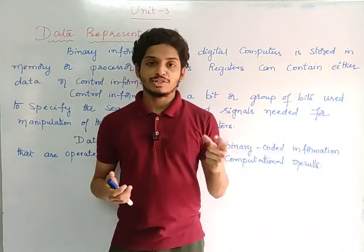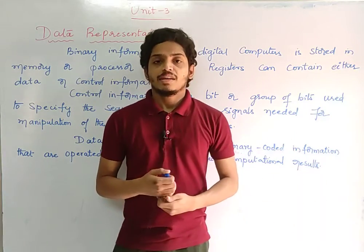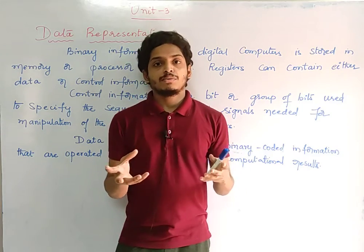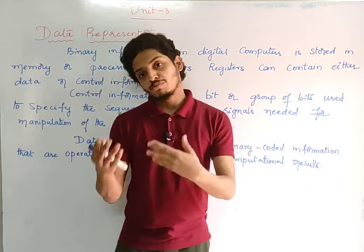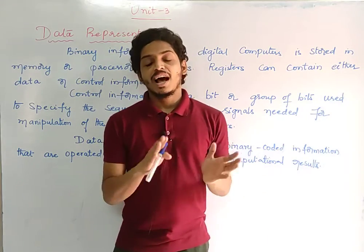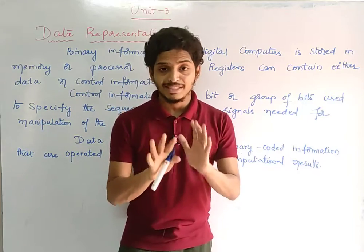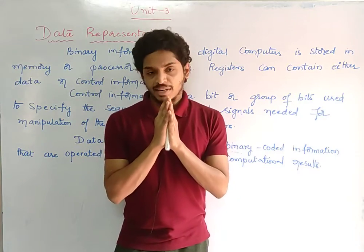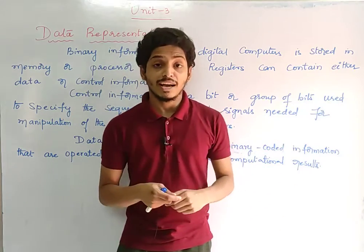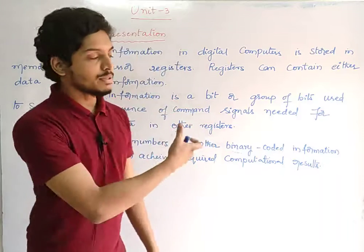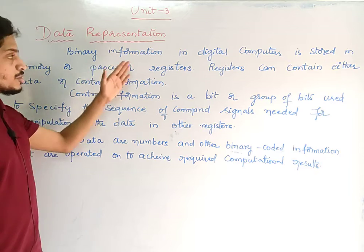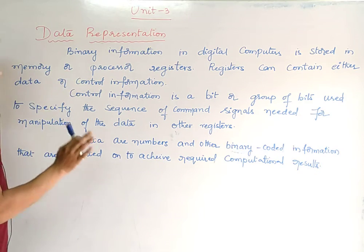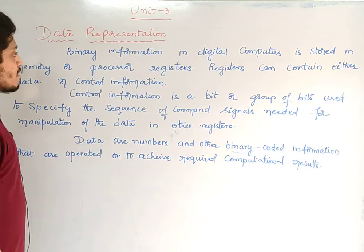Generally, we have computer organization and architecture. When we are comparing data to the computer, we are going to represent the data in general. We have a particular number system that we will store in the computer. Data representation is the topic of binary information. Binary information in digital computers is stored in memory or processor registers.